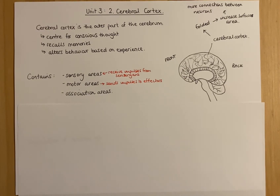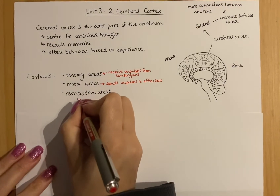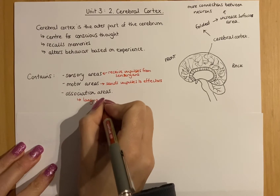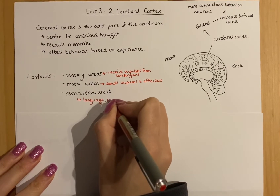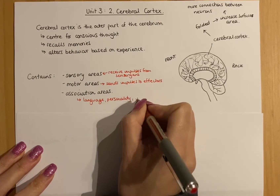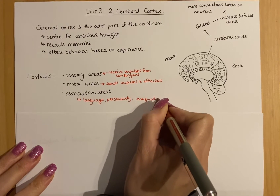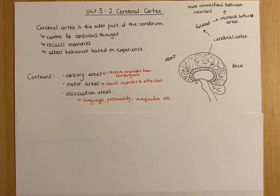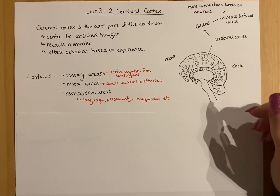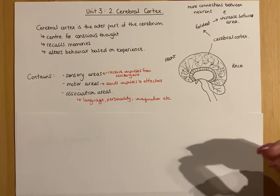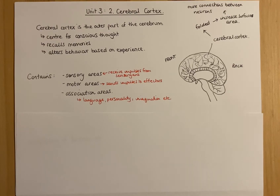You also have in your cerebral cortex a whole range of areas grouped under a large heading called the association areas. Those association areas are to do with language, personality, imagination, intelligence, and so on — all the things that make you interesting. You don't need to know exactly where those areas are; you just need to know that different parts of the brain are responsible for different parts of these functions.